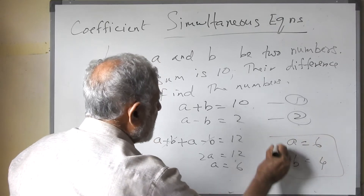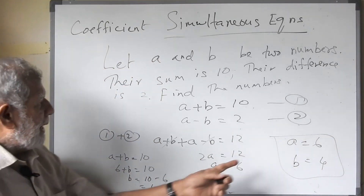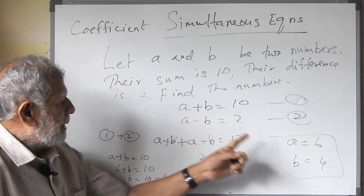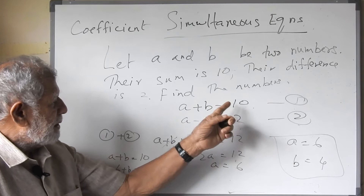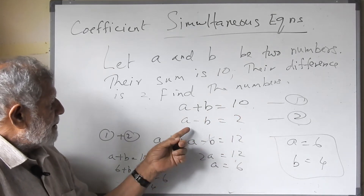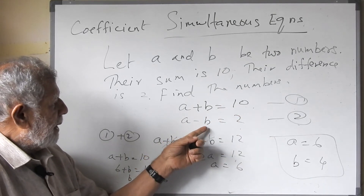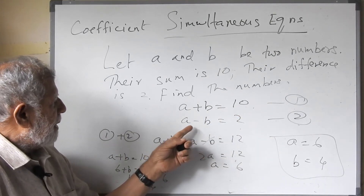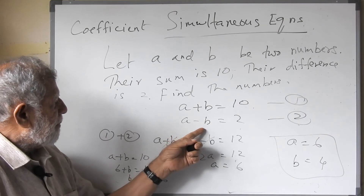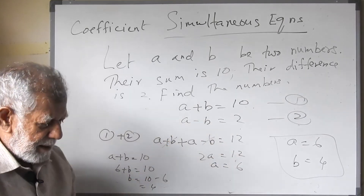If you check: a plus b equals 6 plus 4 equals 10, and a minus b equals 6 minus 4 equals 2. So the answer is correct.